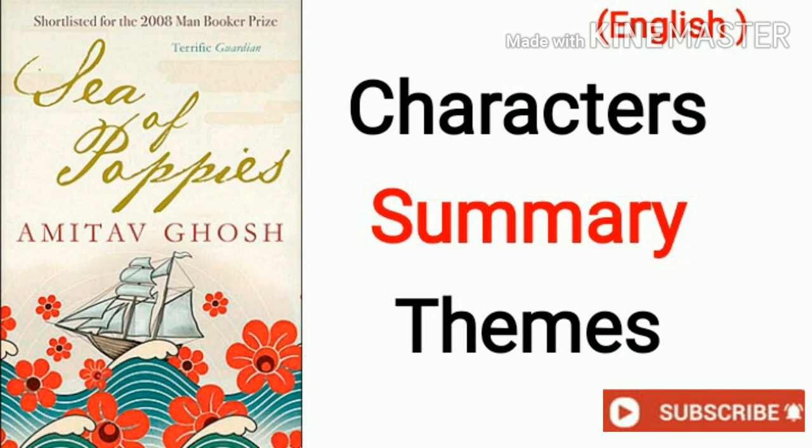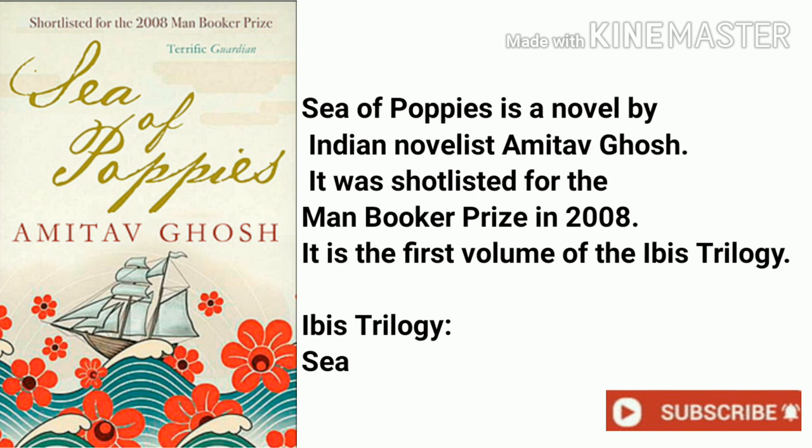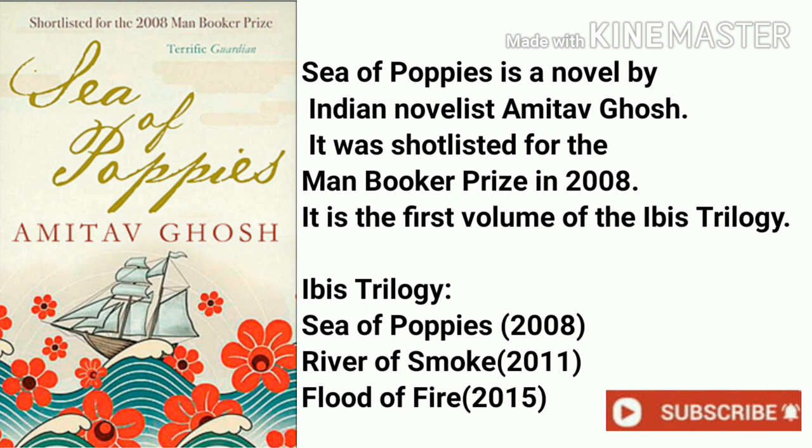Sea of Poppies is a 2008 novel by Indian novelist Amitav Ghosh, which was shortlisted for the Man Booker Prize in the same year. It is the first volume of the Ibis Trilogy, and the other two books are River of Smoke and Flood of Fire.